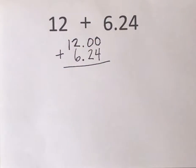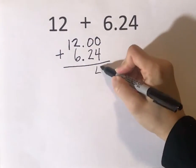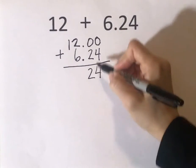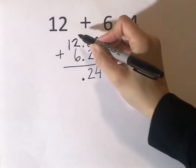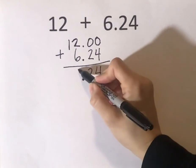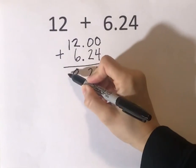And then we add. Pretty simple. We just add 0 plus 4 is 4, 0 plus 2 is 2. We always bring the decimal straight down. And then we add 6, 7, 8, and then the 1.